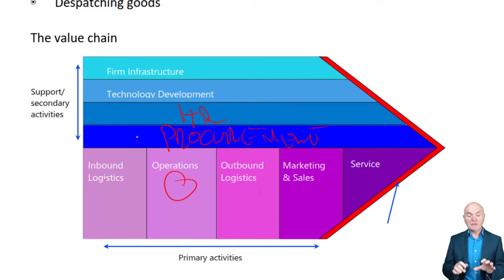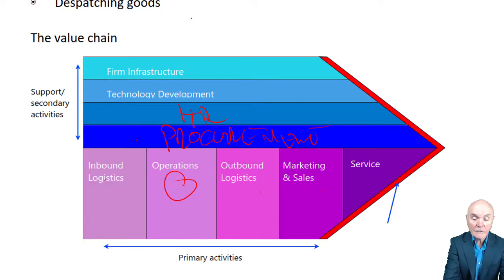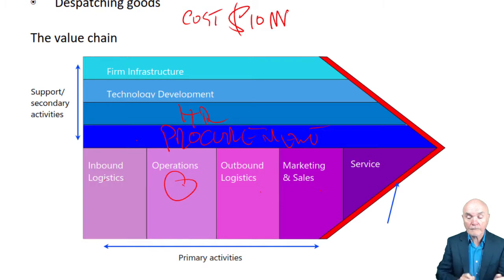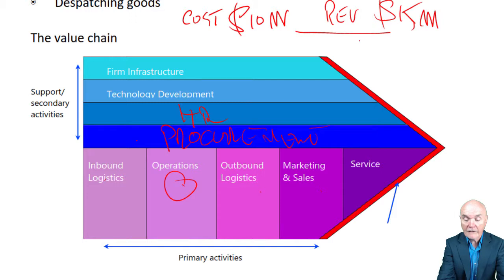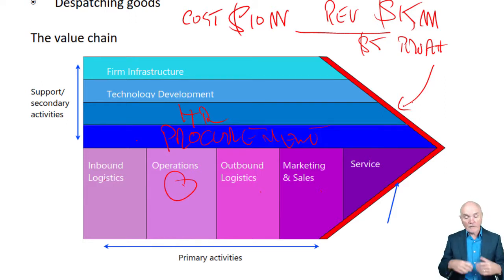Porter said each of these activities will have a cost. Let's say the cost of all the activities is 10 million, and the revenue you get is 15 million — so you've got a profit of 5 million. All of these activities are being organised to generate you a profit.